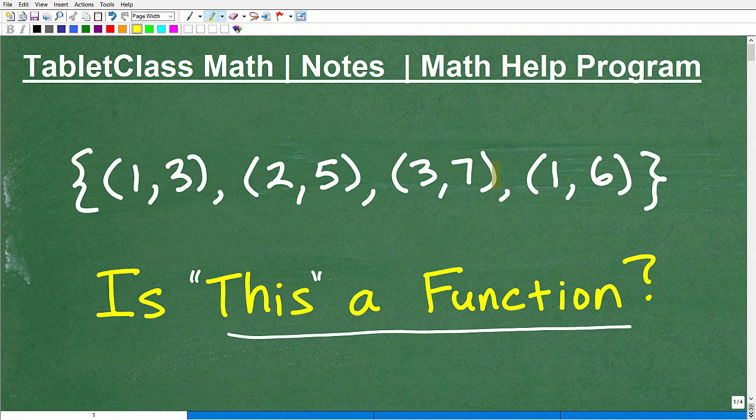Well, what I have here is a collection of points. I have four, specifically these four ordered pair or coordinate x, y points that we could plot on an x, y coordinate plane. But here we have (1,3), (2,5), (3,7), and (1,6). And the question is, again, is this a function? Does this represent a function?